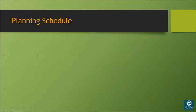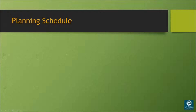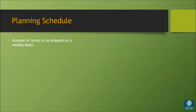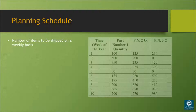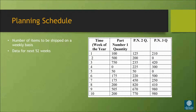The first step in this process is receiving the planning schedule with release capability. The purpose of this document is to list the number of items to be shipped on a weekly basis, as you can see in this chart. Typically, the chart shows data for the next 52 weeks.